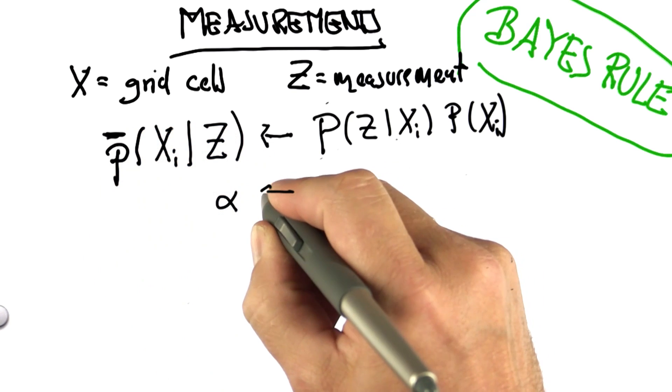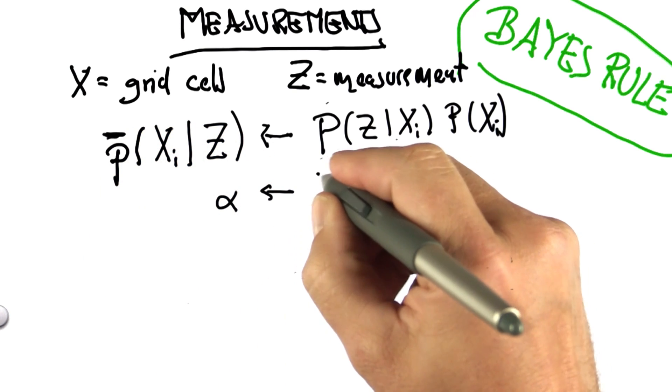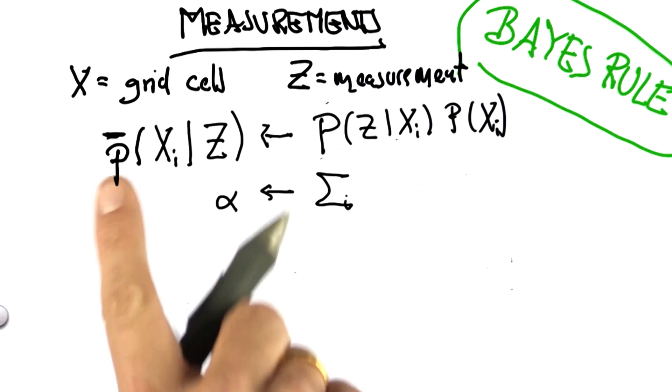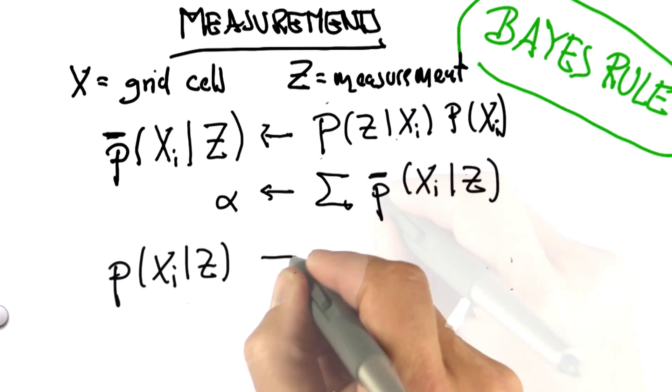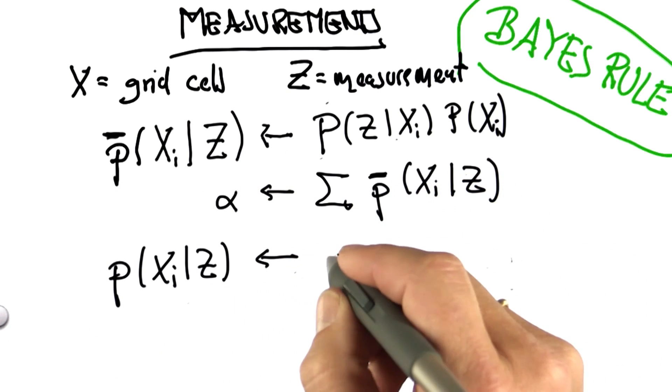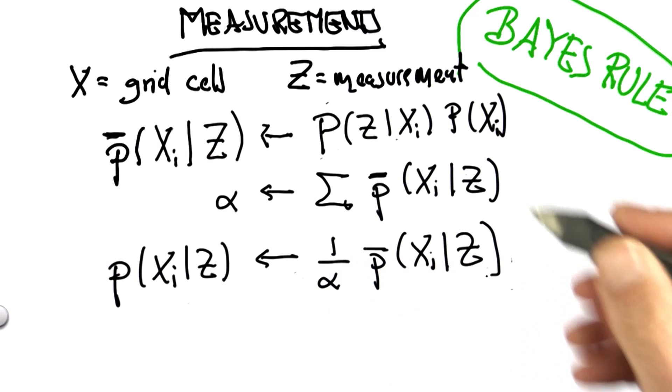And then I compute the normalizer, which I call alpha, as the sum of all these guys over here. And then I just normalize. So my resulting probability will be 1 over alpha times the non-normalized probability. This is exactly what we did, and this is exactly Bayes' rule.